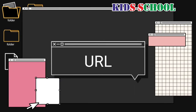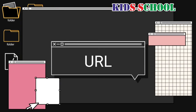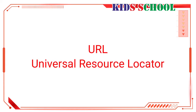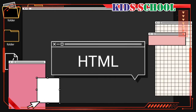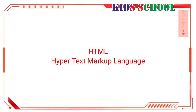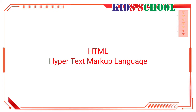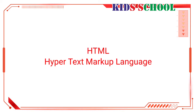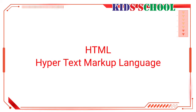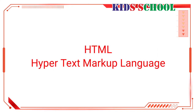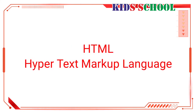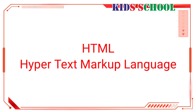URL stands for Universal Resource Locator — it is the address of a website on the internet. HTML stands for Hypertext Markup Language — it is the standard coding language used for creating web pages. It is a set of markup codes or symbols that tells the browser how to display a web page. Each markup code is called an element or a tag.